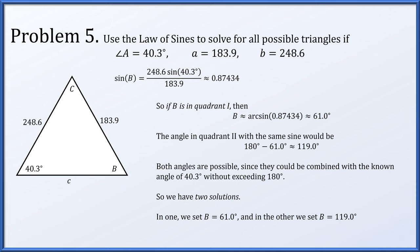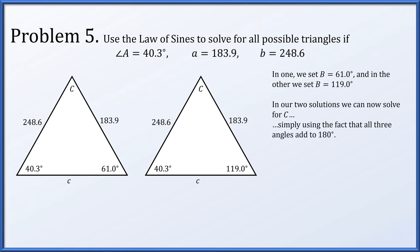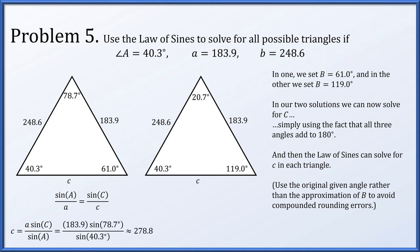In one solution we set angle B to 61.0 degrees, and in the other we set it to 119.0 degrees, then keep going from there. The third angle C is found since all three angles must add to 180: that gives 78.7 degrees on the left and 20.7 degrees on the right. Now we use the law of sines to find side length c — and to avoid compounded rounding errors, use the original given information rather than angle B. On the left, c is about 278.8; on the right, about 100.5.